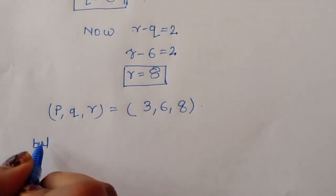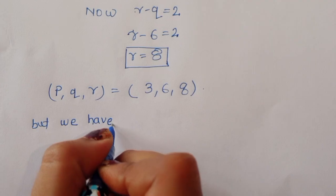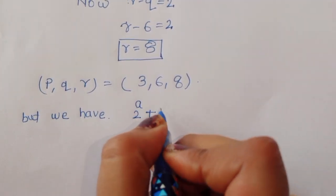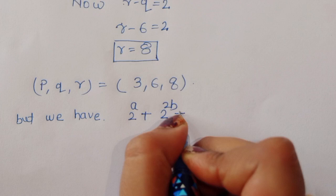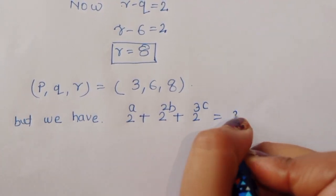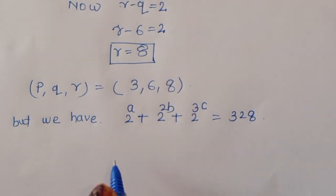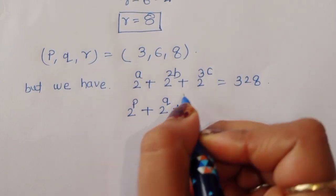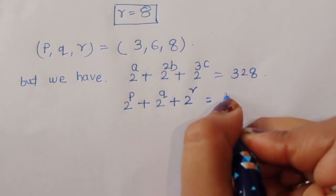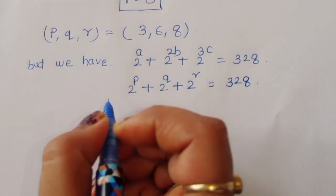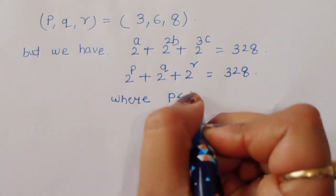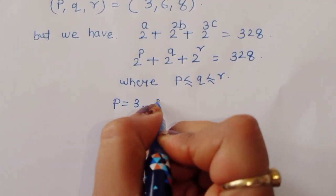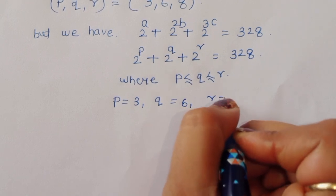Now, recall the equation: 2 power A plus 2 power 2B plus 2 power 3C equals 328. This means A equals P, 2B equals Q, and 3C equals R. The condition is P less than or equal to Q less than or equal to R, giving P equals 3, Q equals 6, and R equals 8.